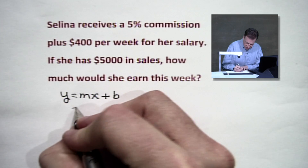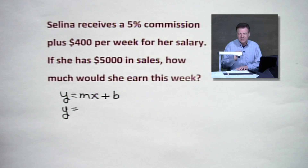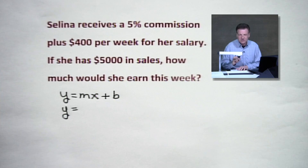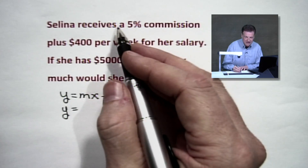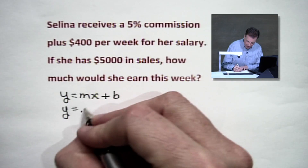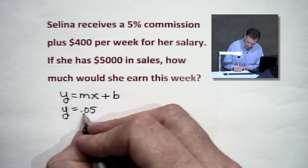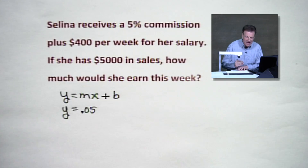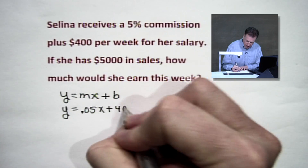Here's the equation we start with: Y equals... and 5% has got to be converted to a decimal. Move that decimal two places to the left and you're going to have five hundredths — 0.05. Make sure there's a zero between the decimal and the five. We've got X, and we've got our 400.